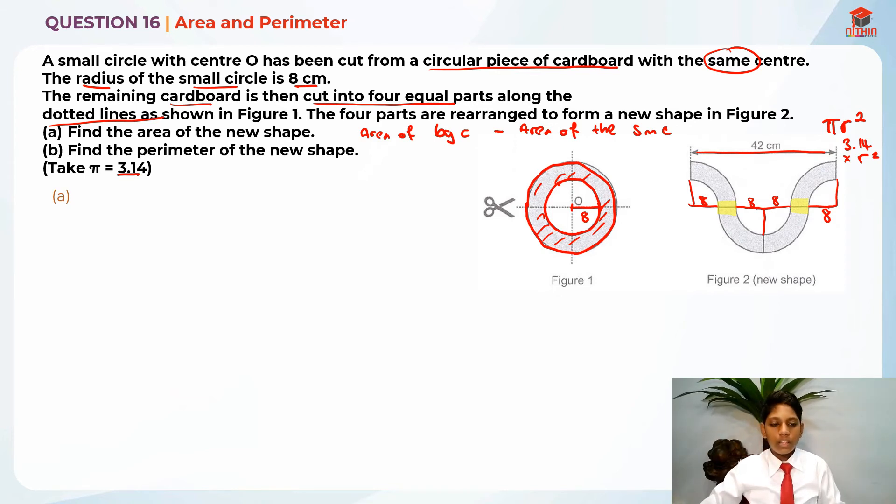So what I'm going to do is to actually take 42 minus these four eighths, and it will give us 10. 10 divided by 2, it will give us 5 for each side. So the radius of the big circle is actually 8 plus 5, which will give us 13 cm.